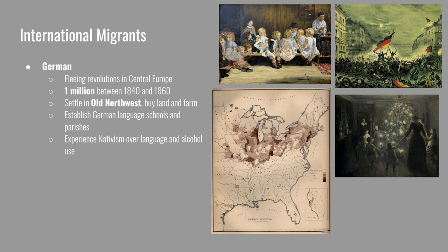Some of the biggest breweries, like Miller, were founded in 1885 and are still based in Milwaukee. Their baseball team are the Brewers, and a favorite delicacy at the ballpark is the German bratwurst. You may also associate cheese with Wisconsin, and that's also a result of German migration in this period. Some of the farms they established were dairy farms where they would make cheese. The Wisconsin football team, the Green Bay Packers, have fans referred to as the cheeseheads.